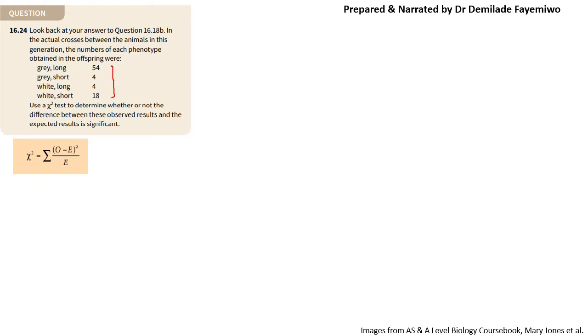This is the formula for a chi-squared test. O stands for the observed number — the number usually given in the question, resulting from the actual mating process: the number of offspring we see and the phenotypes expressed. E stands for the expected number — the number we expect to see for each phenotype based on the ratio we have predicted.